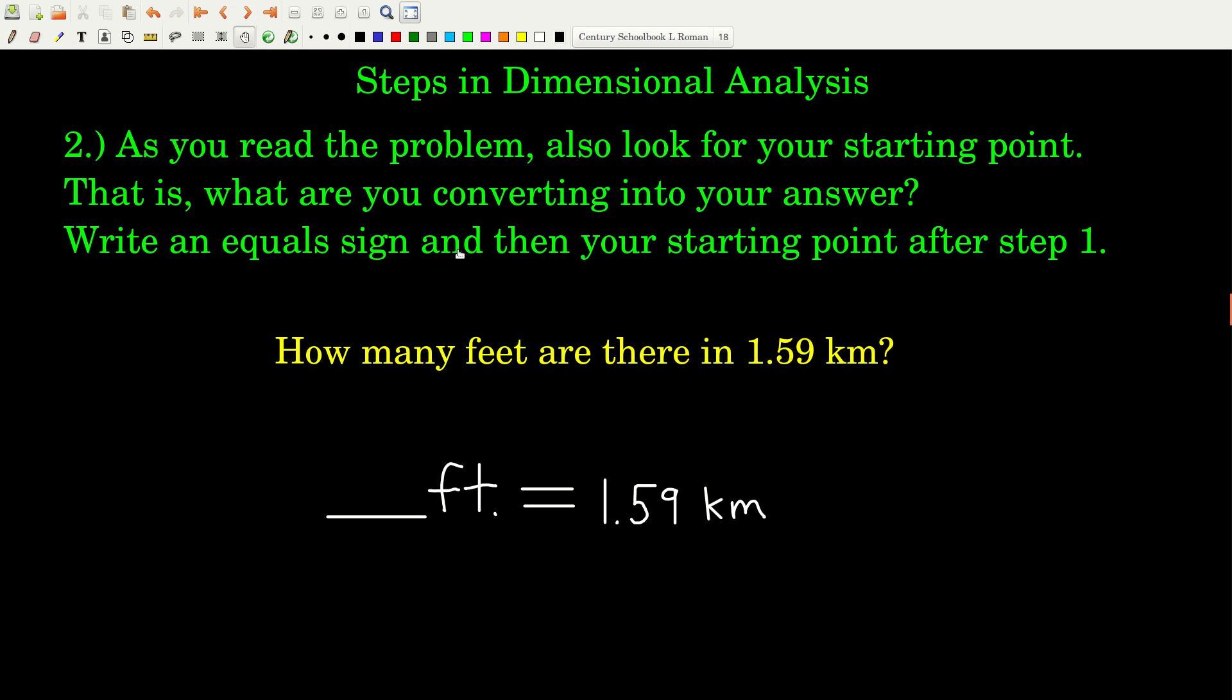Next step is, also as you're reading the problem, another thing that you're going to look for is what I call the starting point. What are you converting into your answer? In this case, what is being converted into feet? Your starting point will always have a value, a number, and a unit. Whereas your answer, the units of your answer, we're trying to find the value. We're trying to find the number. So we'll only start out with the units. So in this problem, our starting point, what we're going to convert into feet is kilometers. So we want to know how many feet are there in 1.59 kilometers. So we wrote down how many feet, we put the blank and then the units of our answer. So what you do now, once you figure out your starting point, is you just put an equal sign and put the value and the units of your starting point. So now we have it set up.